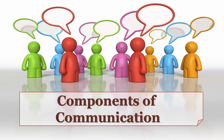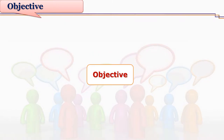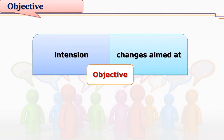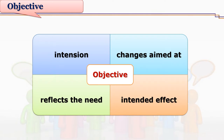In communication, there are various components involved in the process, and we need to see the role of every component so as to make our communication effective. At the end of this session, you will be able to discuss different components of communication. Let us see the component of objective — we can also refer to this as the aim of communication.